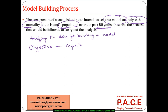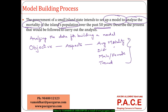We know the mortality rates, and we need to clearly define what we are looking at. Am I looking at the average mortality rate, or am I more interested in the distribution of mortality rates? Should it be split separately for male or female, or are other bifurcations required? Another objective could be: how has the trend been over the last 50 years? There are various objectives, and based on the clear-cut objective that emerges, the plan for the model starts off.